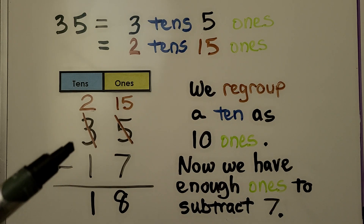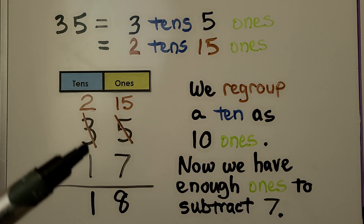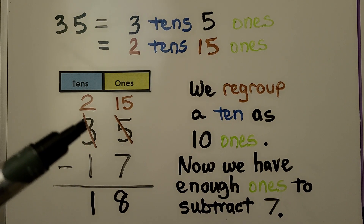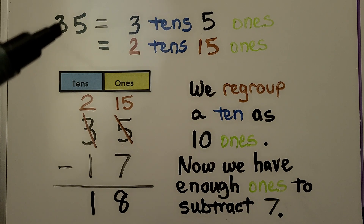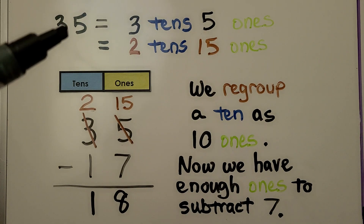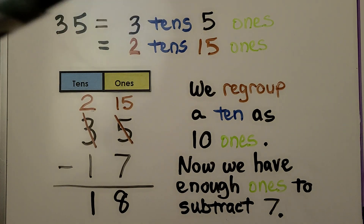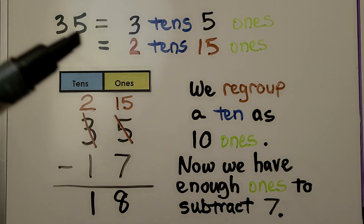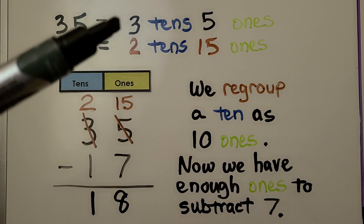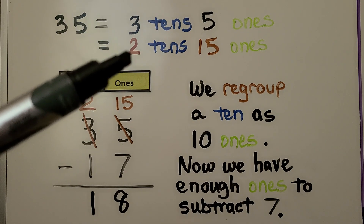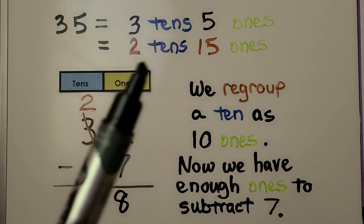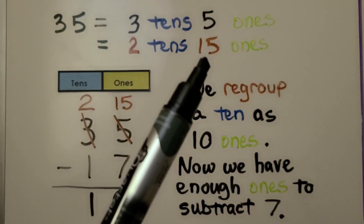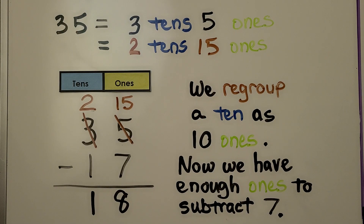In this problem we have 35 minus 17. To regroup, we think of the 35 as three tens five ones, and we take one of the tens — so now there's two tens — and we give it to the ones as ten ones. Now we have two tens, fifteen ones.